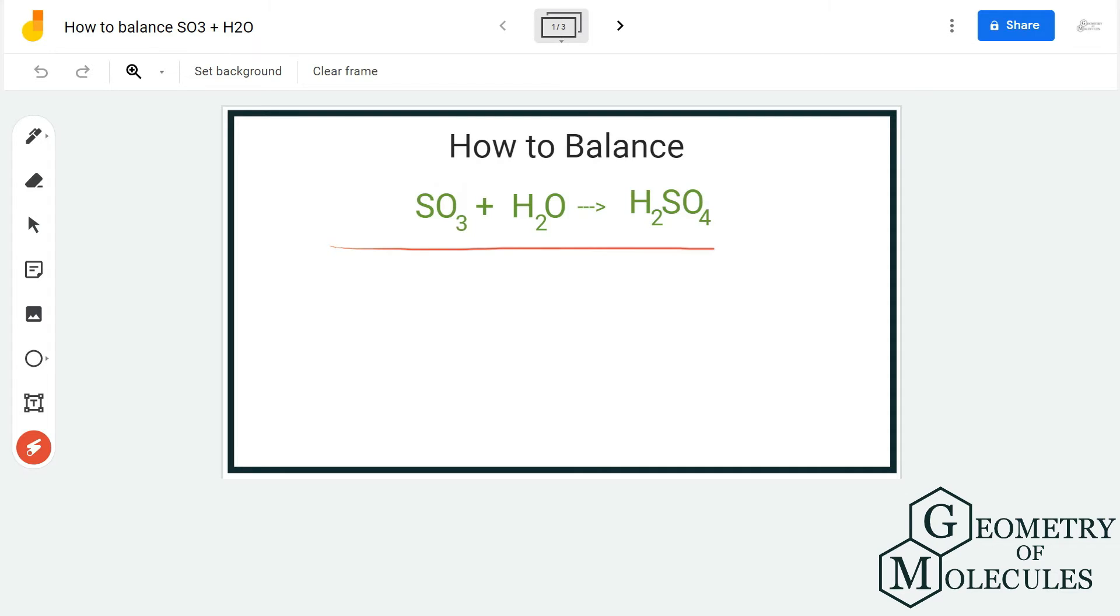To check if this equation is balanced, we're going to consider the number of atoms on both sides. On the reactant side, we have one sulfur. For oxygen, we have three here and one here, so in total we have